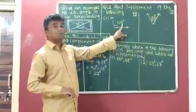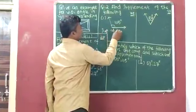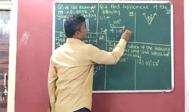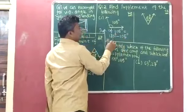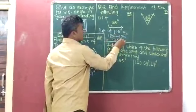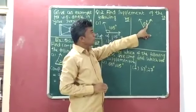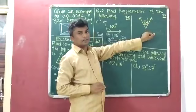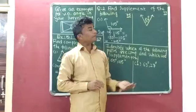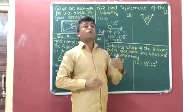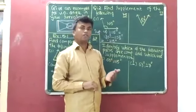We will identify the supplement of 105 degrees. Supplement of 105 degrees is equal to 180 degrees minus 105 degrees, and its answer is 75 degrees. Now second: 87 degrees. Here we have to identify the supplement of 87 degrees. If you want to identify the supplement of 87 degrees, you have to subtract 87 degrees from 180 degrees, because the sum of measures of two supplementary angles is 180 degrees.